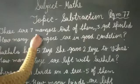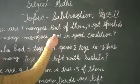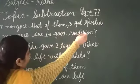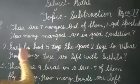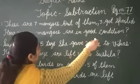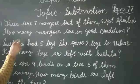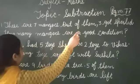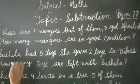There are seven mangoes, out of them three were spoiled. Spoiled means rotten. How many mangoes are in good condition? Here we write seven mangoes, out of them three were broken. Now how many are in good condition?